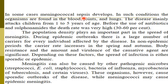In some cases, meningococcal sepsis develops. Bacteremia is the presence of bacteria in the bloodstream. Septicemia is the presence of toxins in the bloodstream; following septicemia, septic shock can occur, followed by death. In some advanced cases of meningococcal meningitis, sepsis may occur.